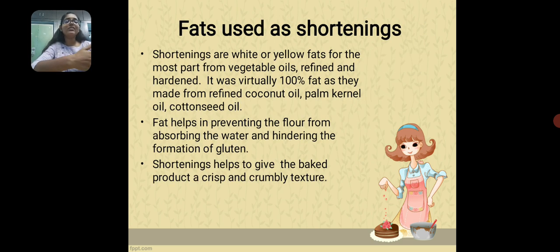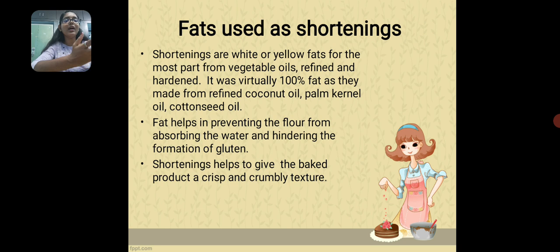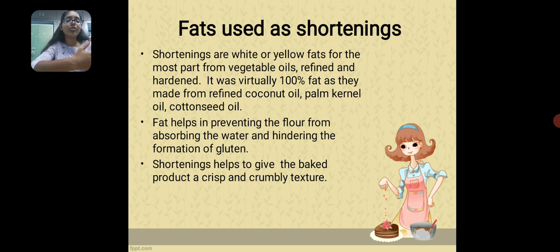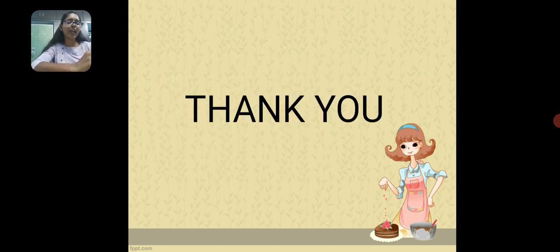Fat is used as a shortening. It can be a white or yellow fat and is virtually 100% fat, made from refined coconut oil, palm kernel oil and cottonseed oil. Fat helps in preventing the flour from absorbing water and hindering the formation of gluten. Shortening used in baking products gives a crisp and crumbling texture.